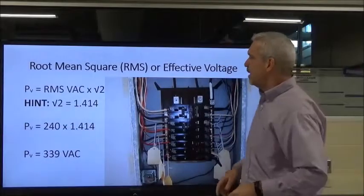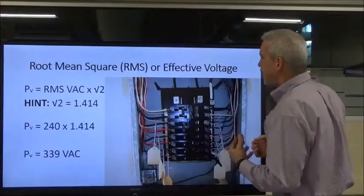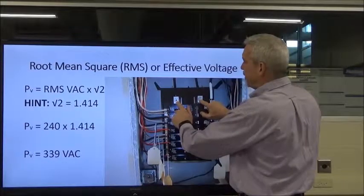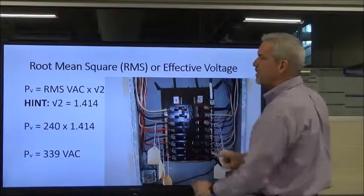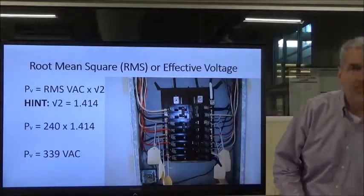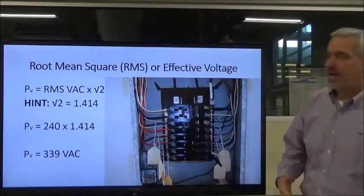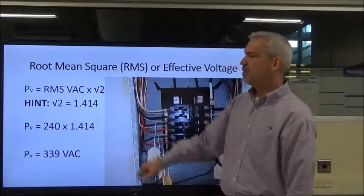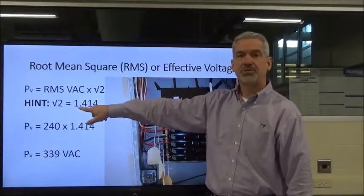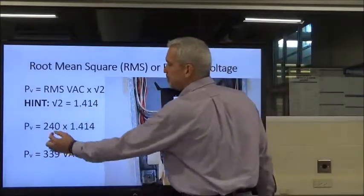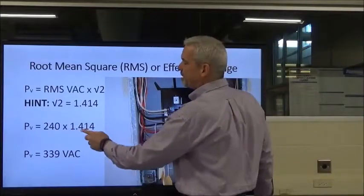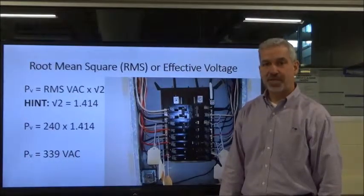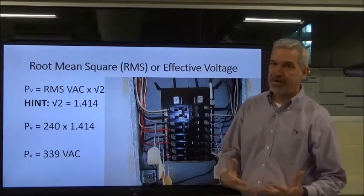Now let's put this in a practical application. We've got power coming from the power company — they feed us two legs of 120 volts, and we put our meter across here and measure 240 volts. Remember, our meter is root mean square. So we take that RMS value of 240 volts AC and multiply by the square root of two, which is 1.414. That gives us a peak value of 339 volts AC — that's really what's coming into the house. What we're measuring with our meter, though, is root mean square.